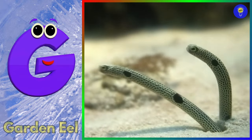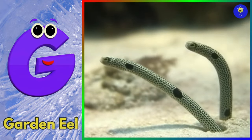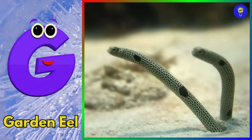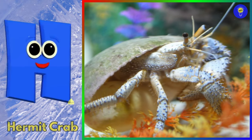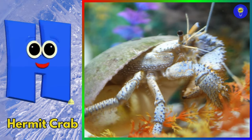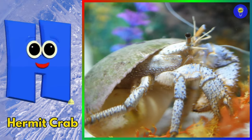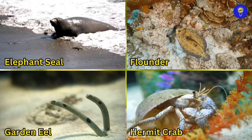G is for garden eel. Guh, guh, garden eel. H is for hermit crab. Ha, ha, hermit crab.